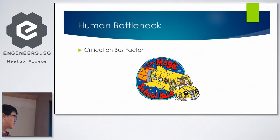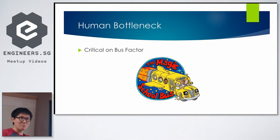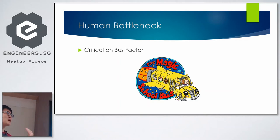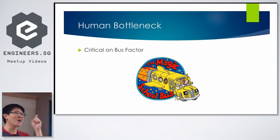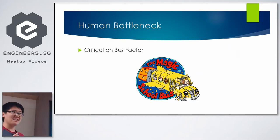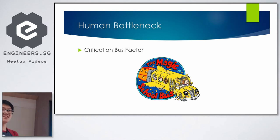Another problem we faced is the human bottleneck — I would describe it using something called the bus factor. To crudely put it, it means how many times a bus can run over a different member in your team before your project actually collapses on itself. For us this was a very scary figure: one. We had one WordPress engineer, and if this person quit or went on extended leave, essentially we're screwed.